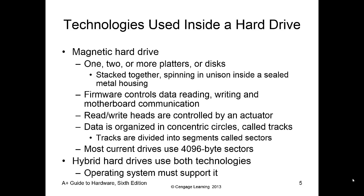So how is data organized on those metal disks? They're organized in tracks, which is a giant circle around the disk. The disk is also broken up into pizza slices. Wherever a track and a pizza slice meet, those sections are called sectors.